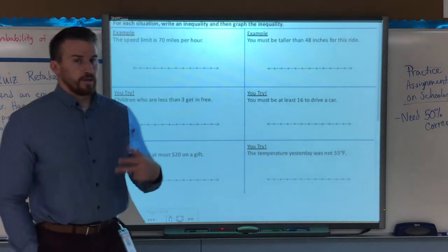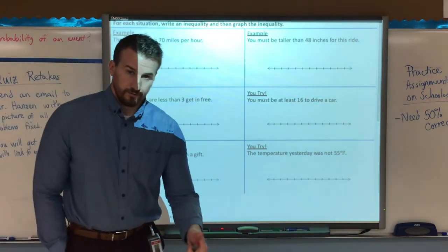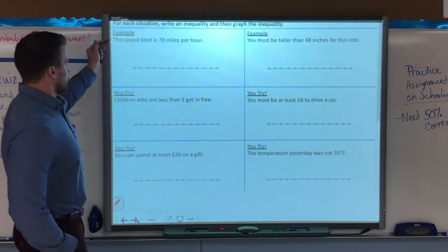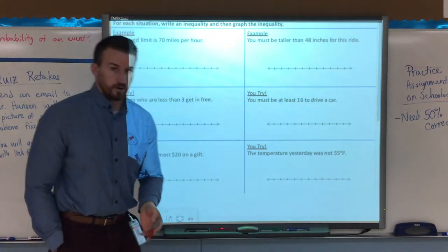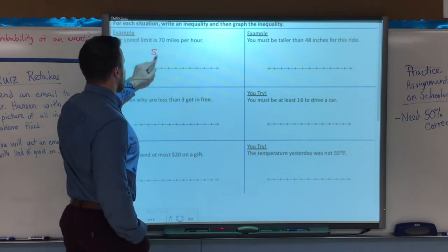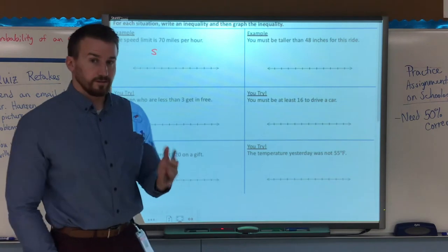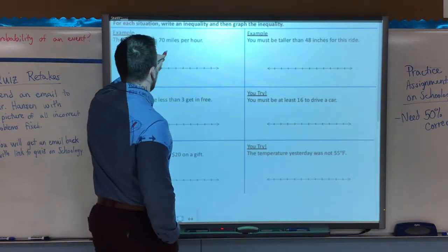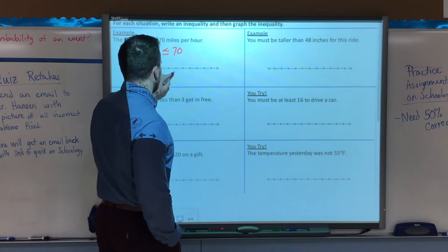So let's get to our examples. We have to take an inequality, write one, and then graph one from the word problem. So example one, the speed limit is 70 miles per hour. So we're going to call S for the speed limit, and it's 70 miles per hour, which means it can be 70 miles or less, right?